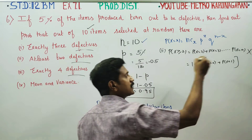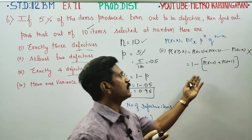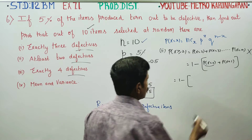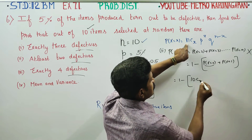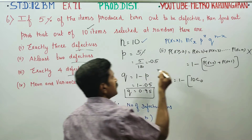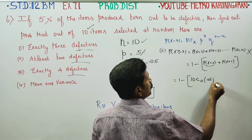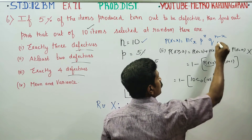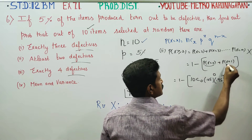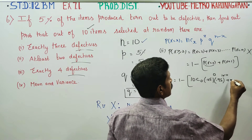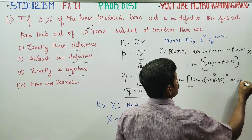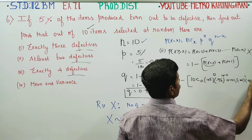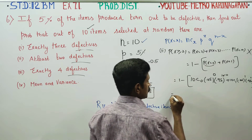P(X ≥ 2) equals 1 minus P(X=0) minus P(X=1). For x equal to 0: 10C0 multiplied by 0.05 to the power 0 multiplied by 0.95 to the power 10. For x equal to 1: 10C1 multiplied by 0.05 to the power 1 multiplied by 0.95 to the power 9.